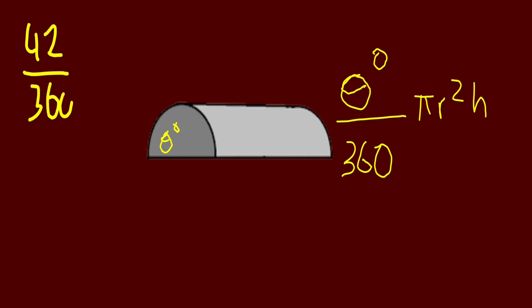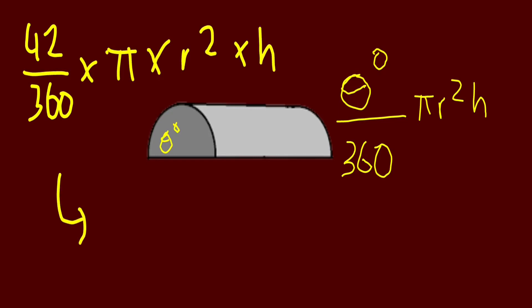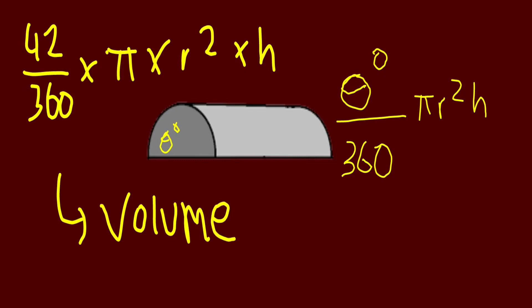However, if you have a theta — an unknown angle — all you do is theta over 360 times pi r squared times height. The theta can be anything. So for example, if it was 42, we would do 42 over 360 times pi times r squared times height or depth. And this gives the volume. And that's all by me. See you in the next one.